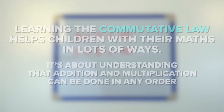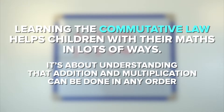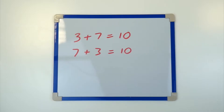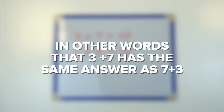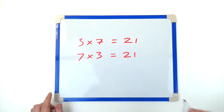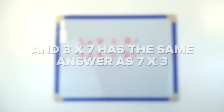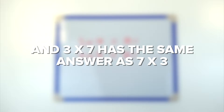Learning the commutative law helps children with their maths in lots of ways. It's about understanding that addition and multiplication can be done in any order. In other words, 3 plus 7 has the same answer as 7 plus 3, and 3 times 7 has the same answer as 7 times 3.